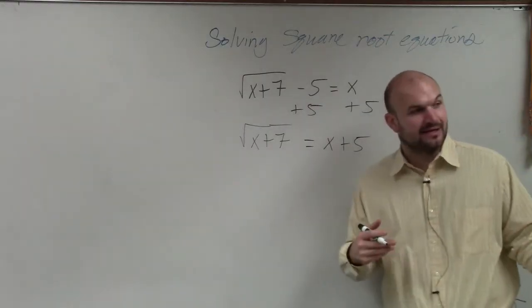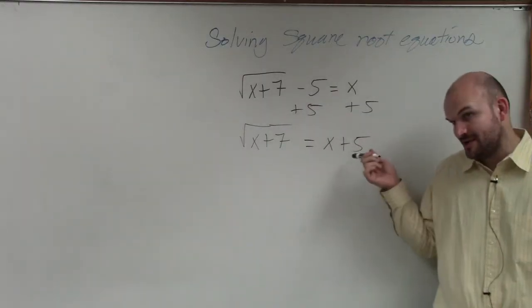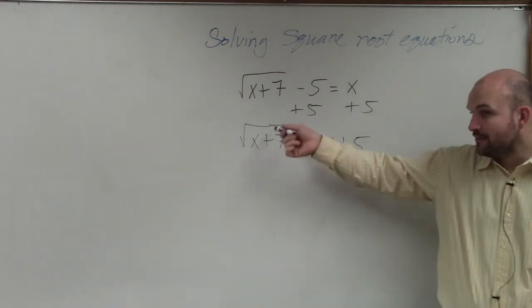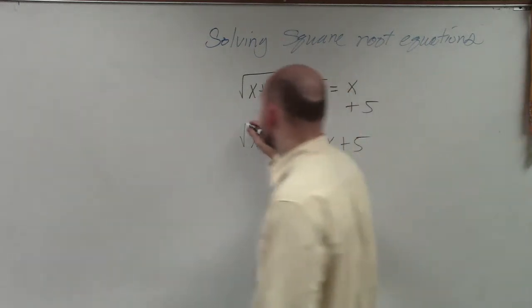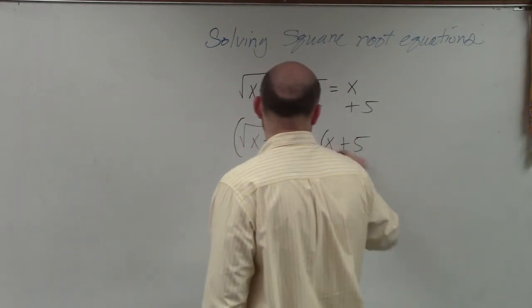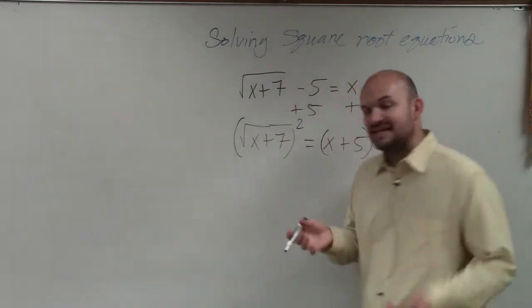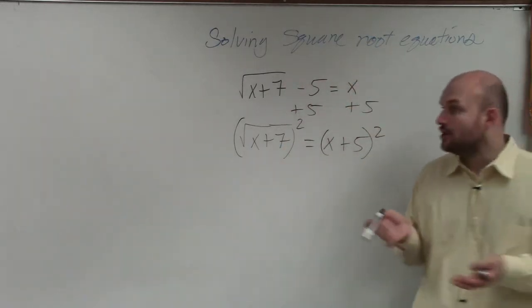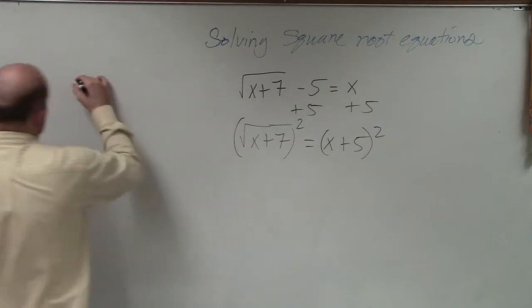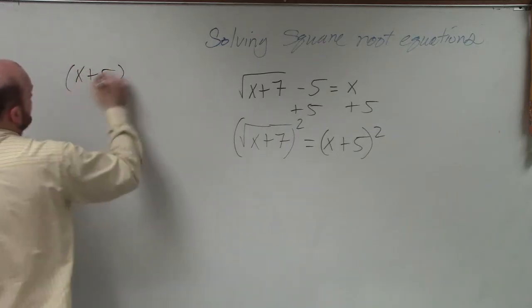Now, unlike the last problem we did, we now have an expression on the right-hand side. So if I want to undo the square root, I do have to square it. But now I have to square the expression. So we have to remember, well, what does x plus 5 squared mean?